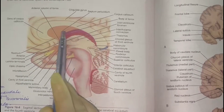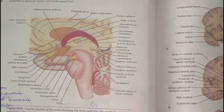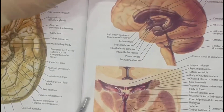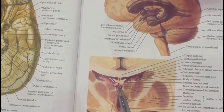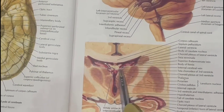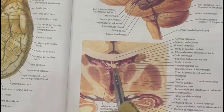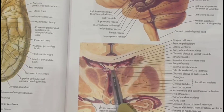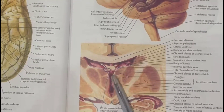The roof of the third ventricle is pretty much clear in this picture. The roof is formed by the tela choroidea and the choroid plexus.